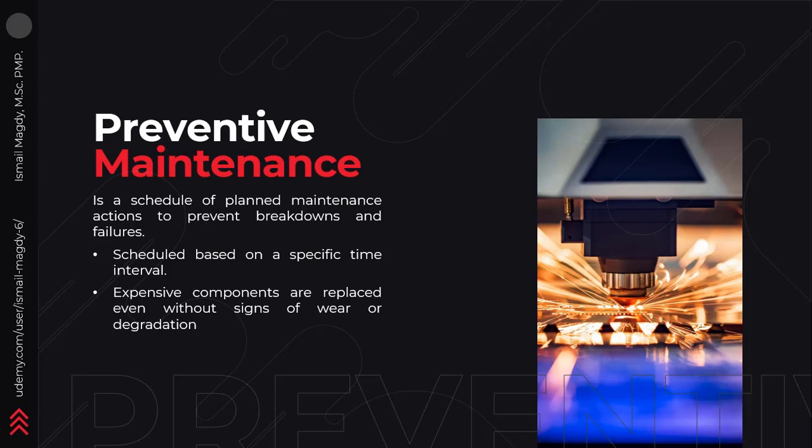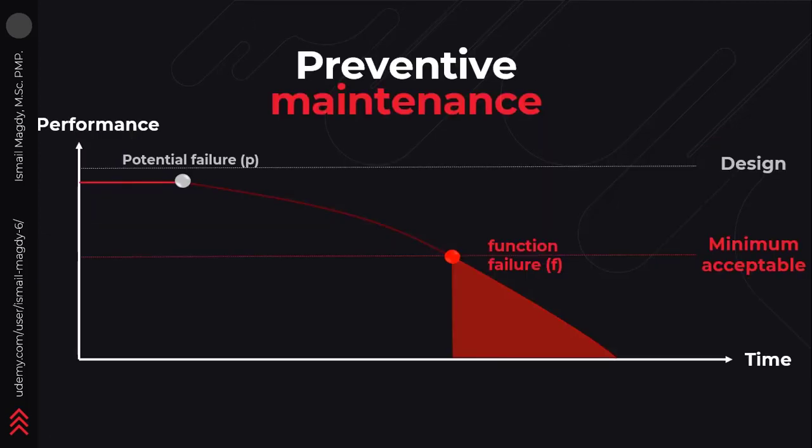Samples of those maintenance actions are lubrication, minor adjustments, or some minor spare parts replacement based on their expected lifetime. Preventive maintenance tasks, or as we call it PMs, is a schedule of planned maintenance actions to prevent the breakdown, carried out based on a specific time interval for each equipment, and specific spare parts are replaced within those maintenance actions.